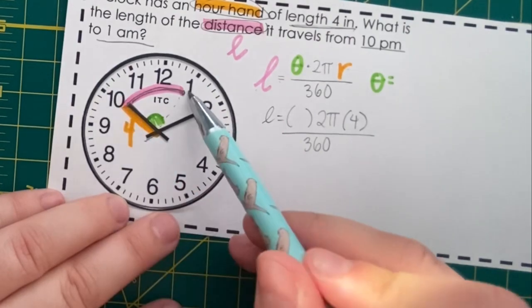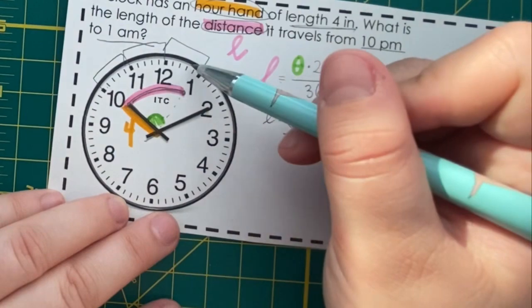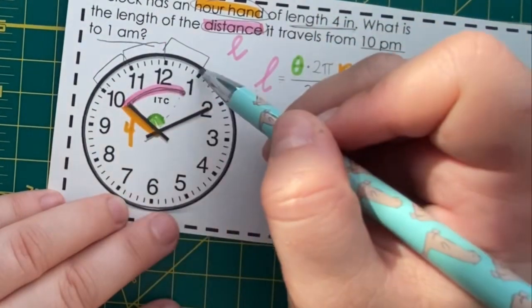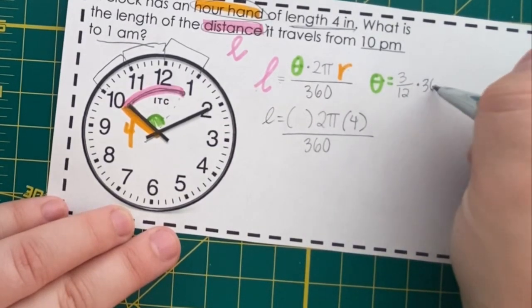So, from 10 to 1 is 1 to 3 hours out of 12 total hours on the clock times 360.